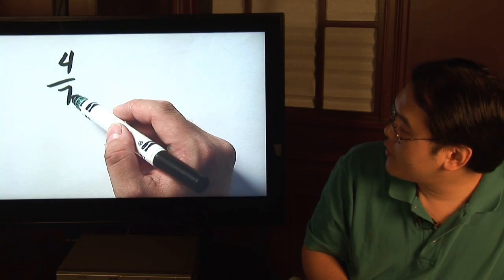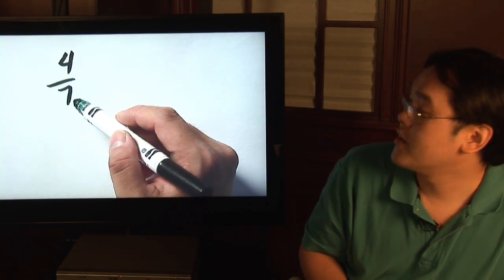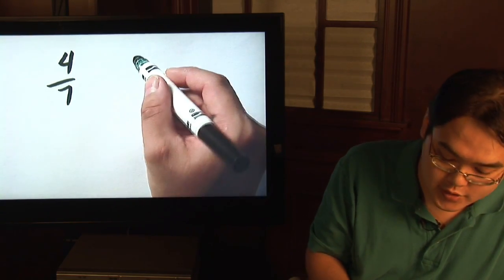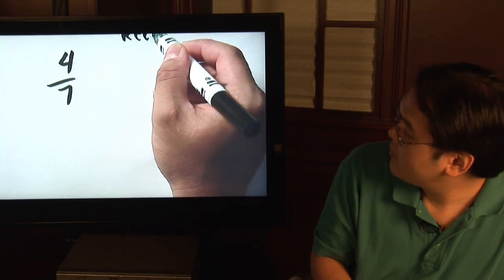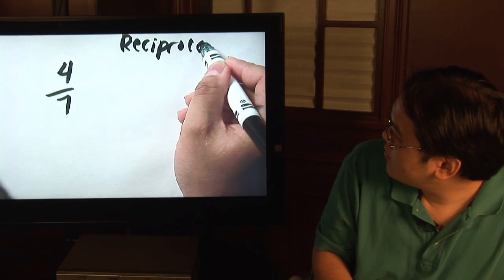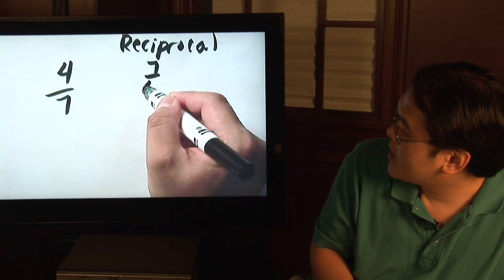So here's an example. Take the four over seven and literally just flip the top and bottom numbers. So the reciprocal is going to be seven over four.